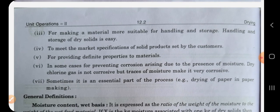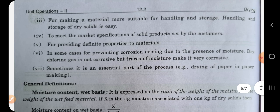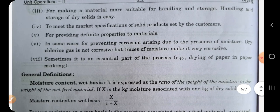Fifth, for providing definite properties to a material — if products are not dried and kept in liquid form, their properties can change with changing temperature conditions, so it is recommended to dry products to fix their properties. Sixth, in some cases for preventing corrosion arising due to the presence of moisture — for example, dry chlorine gas is not corrosive but traces of moisture make it very corrosive, hence chlorine gas is dried. Seventh, sometimes drying is an essential part of the process — for example, paper must be dried before use as a final product.